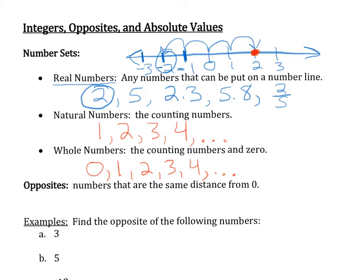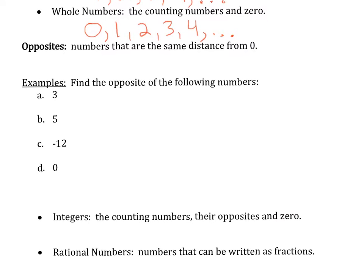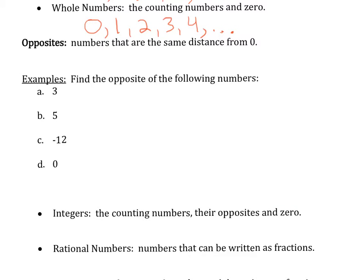Let's look at a couple of examples where we find the opposites of numbers. For the first example, I have 3 — 3 is 3 units from 0, so the opposite is negative 3. For 5, it's 5 units from 0, so the opposite is negative 5. Notice that one is positive and the other is negative — that's what opposites do; the number part stays the same. For negative 12, the opposite is positive 12. And for 0, well, 0 is 0 units from 0 and is a neutral number, so its opposite is 0.